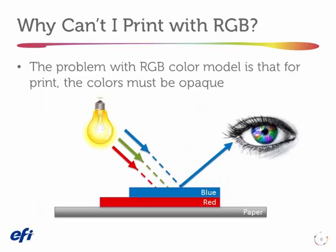If I try to print a purple color, I put some RGB inks into my press and print red down first and blue second — a combination that on my monitor looked like a terrific purple. But looking at this sample, you can see the substrate on the bottom and the inks piled up. The red light gets absorbed by the blue ink, the green light also gets absorbed by the blue, and only blue reflects back to the observer's eye. Your customer will ask where's my purple, and there's no way to get those RGB colors to give the illusion of purple without using a purple ink.